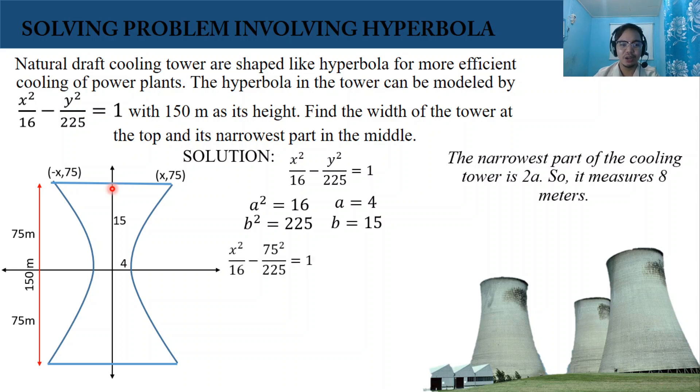Let's substitute the value of y in our given equation. We have x squared over 16 minus 75 squared over 225 equals 1. 75 is the value of y. Then 75 squared is 5,625.